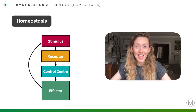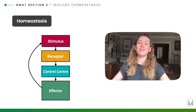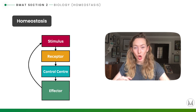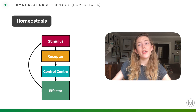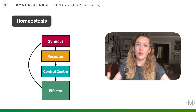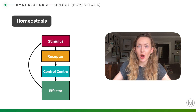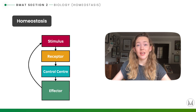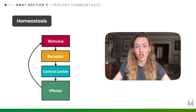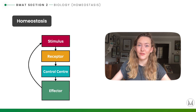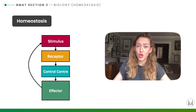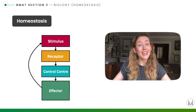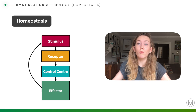Homeostasis is the maintenance of a constant body environment. When there's a change in the internal or external body environment, homeostasis will correct that change through negative feedback. Homeostasis is controlled by both the nervous and the endocrine or hormonal systems in the body.